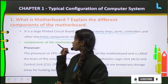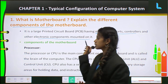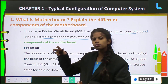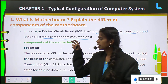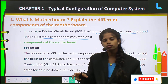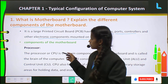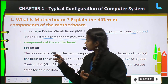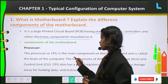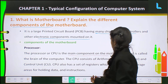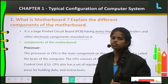Next come the components of the motherboard. Electronic components are mounted on it. The main components you will see on the motherboard, necessary for the system to work properly, are as follows. The first one is the processor. A processor or CPU is the main component on the motherboard and is called the brain of the computer.